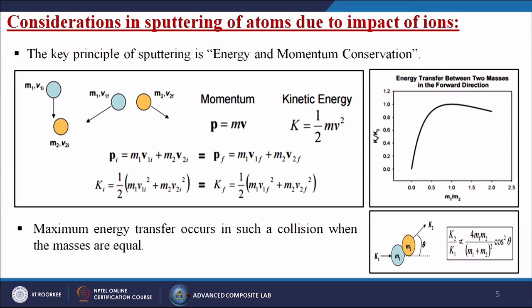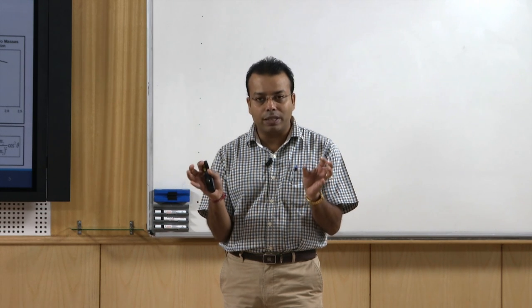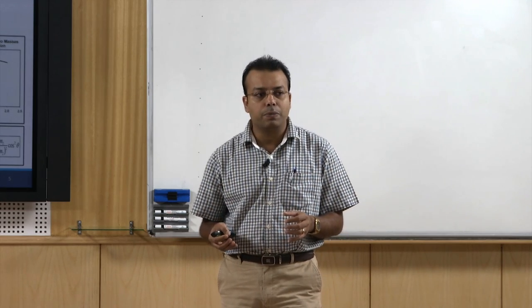From these equations: momentum is p = mv and kinetic energy is k = ½mv². These should be equal, and maximum energy transfer occurs in collisions when the masses are equal. The ratio m1 to m2 of argon mass to target material mass — when the masses are almost one (almost equal), you get maximum energy. That means when the masses of the gas molecules are the same, we get maximum efficiency of the sputtering techniques.